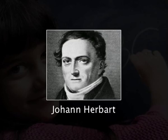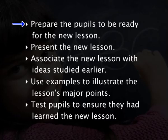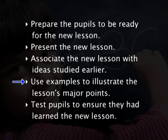Next is John Herbart, the father of educational psychology. He postulated conditions that would help learners in learning a subject matter thoroughly, which were later developed into five steps of teaching by his followers. Herbart's five steps for effective teaching are: prepare the pupils to be ready for the lesson, present the new lesson, associate the new lesson with ideas studied earlier, use examples to illustrate the lesson's major points, and test pupils to ensure they had learned the new lesson.